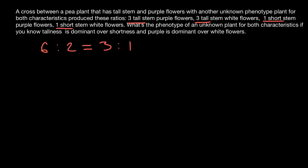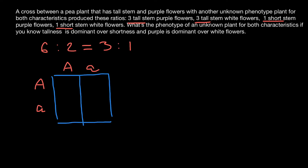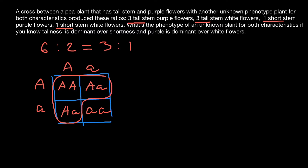We can get such a ratio if we cross one heterozygous tall plant with another heterozygous tall plant. In that case, in the progeny we get the following genotypes: capital A capital A, capital A small a, capital A small a, and small a small a. All of these plants except small a small a are phenotypically tall — a three to one ratio, just like what we see here.